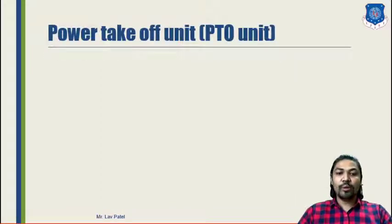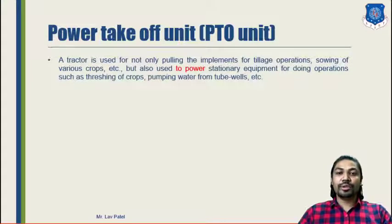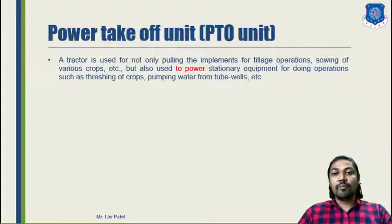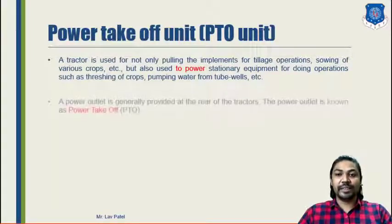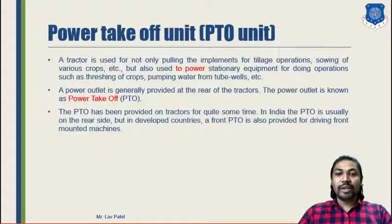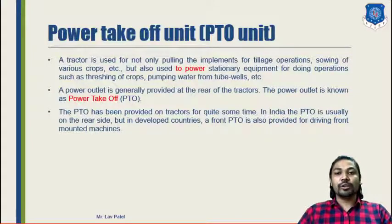Now let us discuss the power takeoff unit, or PTO shaft. The tractor is used not only for pulling implements like tillage operations or sowing of various crops, but also to power stationary equipment. Power can be delivered through the PTO shaft for operations such as threshing of crops and pumping water from tube wells. In India, the PTO shaft is usually at the rear side, while in developed countries a front PTO shaft is also available.